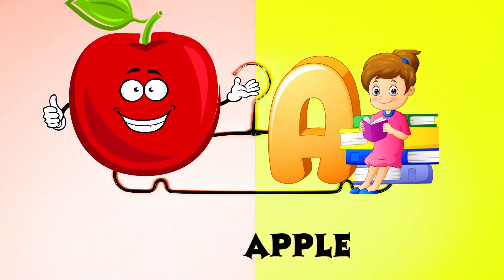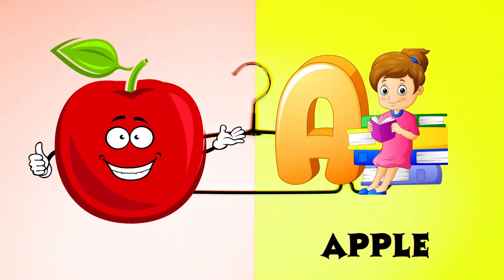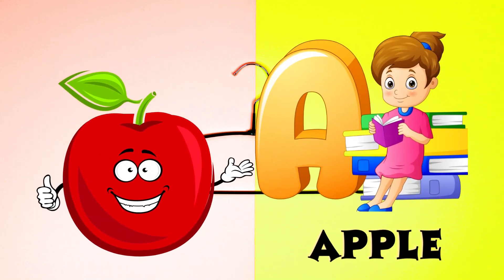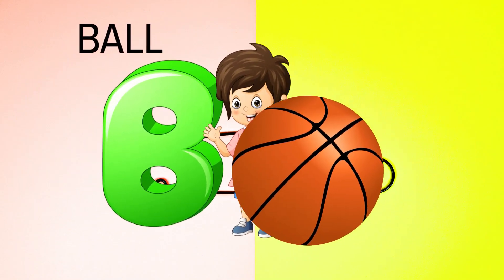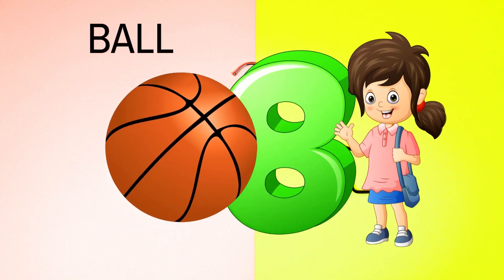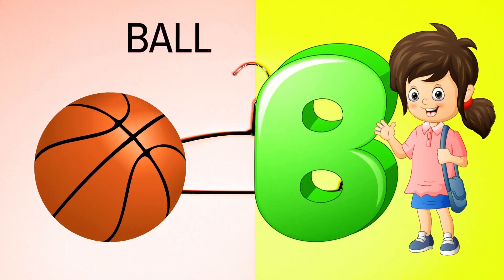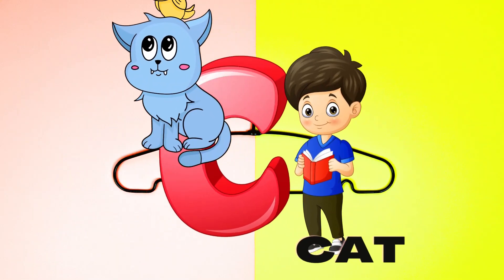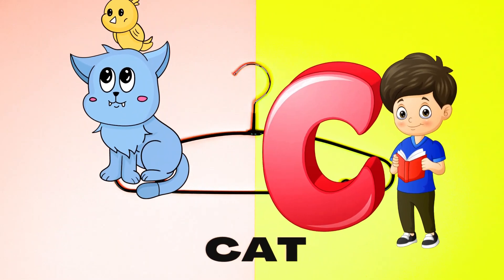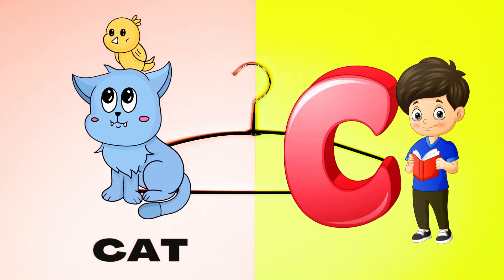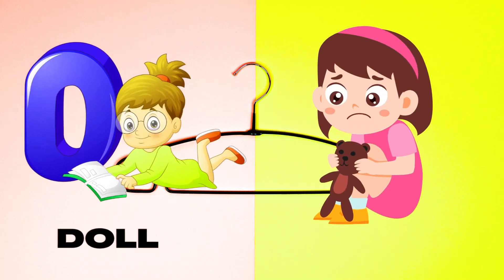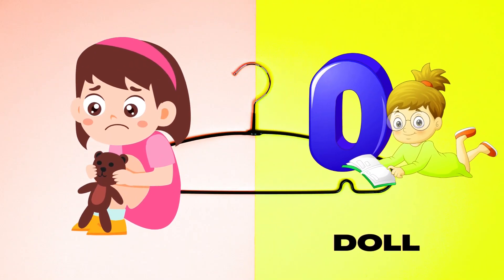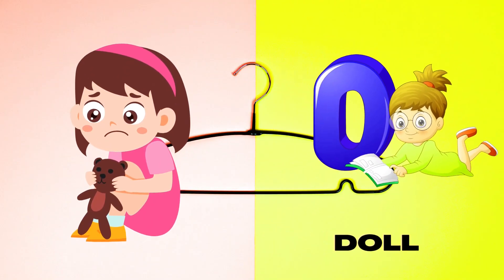A is for Apple, A-A-Apple. B is for Ball, B-B-Ball. C is for Cat, C-C-Cat. D is for Doll, D-D-Doll.